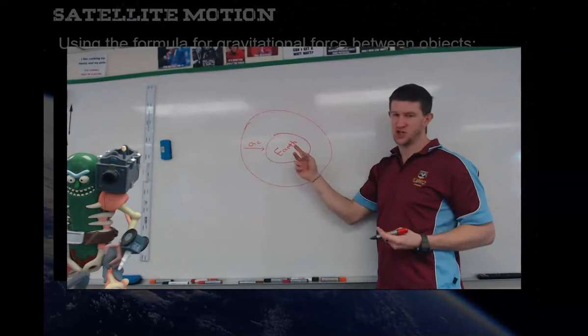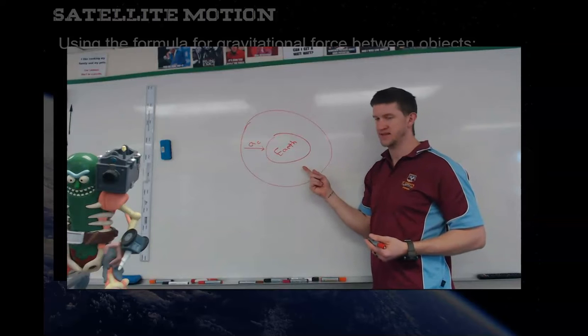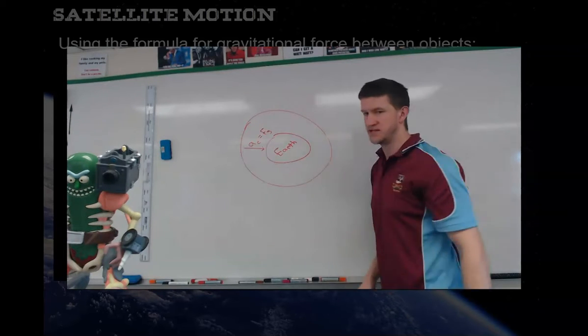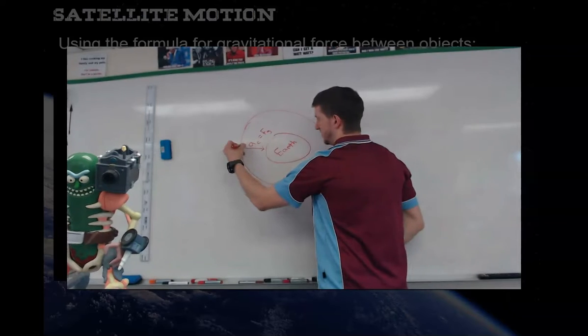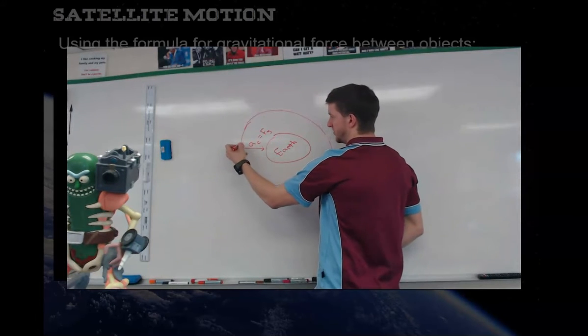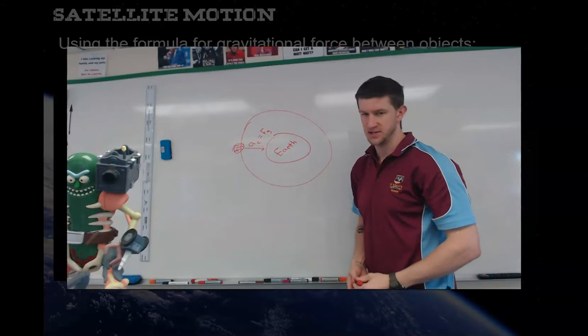there is no tension of a string or cable or anything attaching this. So what is actually providing the centripetal acceleration? It's equal to the gravitational force between two objects. If this is an orbiting planet or a satellite or whatever, the force of gravity on it is the thing that's providing that centripetal acceleration.